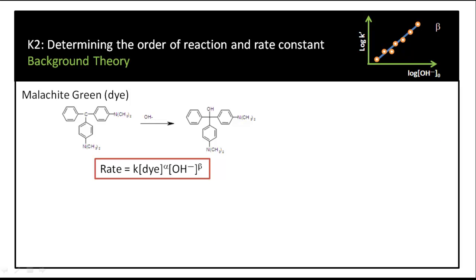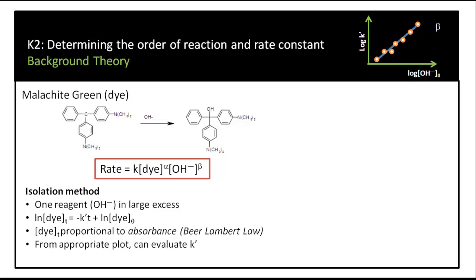Malachite green is a very strongly colored green dye, and when it reacts with hydroxyl ions the color disappears, forming a colorless solution. The rate of this reaction is k times the concentration of the reactants each raised to some power. To simplify, we will have hydroxyl ions in large excess, reducing this to pseudo first order conditions. Assuming alpha equals 1, we can determine the pseudo first order rate constant k-prime from a plot of log of the dye concentration against time.